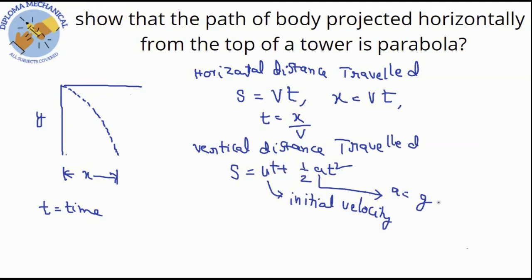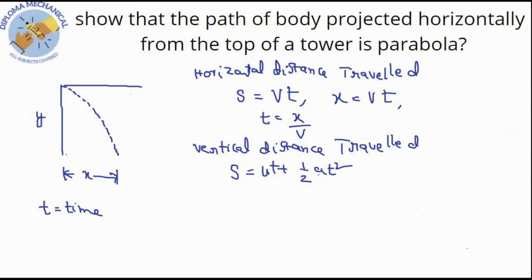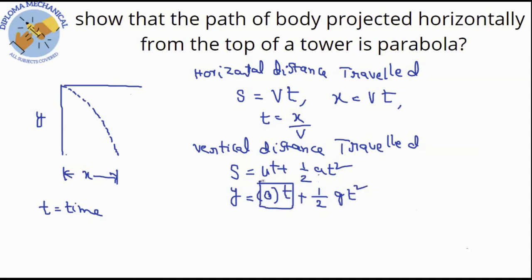A means acceleration due to gravity is g. Now I will substitute values in this equation. The vertical distance is y = ut + ½gt². The initial velocity is 0 because we drop the stone horizontally. So the first term becomes 0, and we are left with y = ½gt².